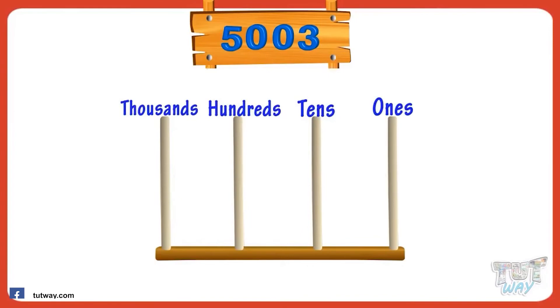It shows three ones are there in the number. Zero tens are there in the number. Zero hundreds are there in the number.